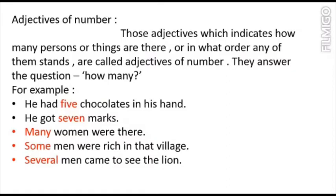The definition of adjective of number is: those adjectives which indicate how many persons or things are there, or in what order any of them stands, are called adjectives of number. Adjective of number refers to how many persons or things are there, or in what order they stand.